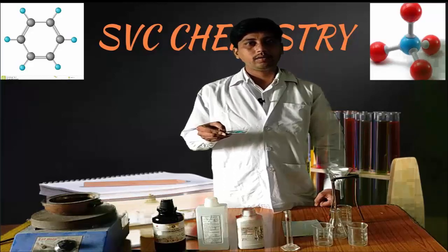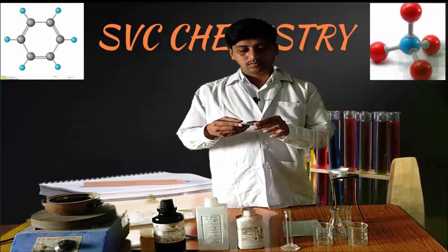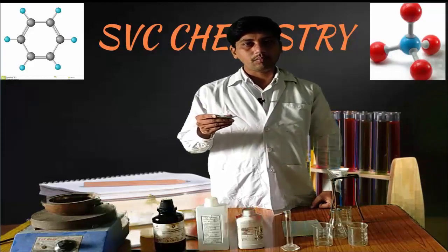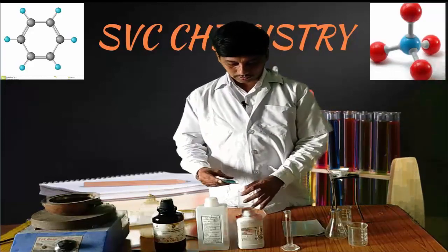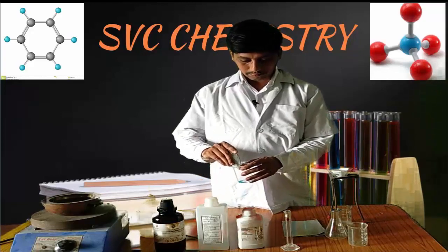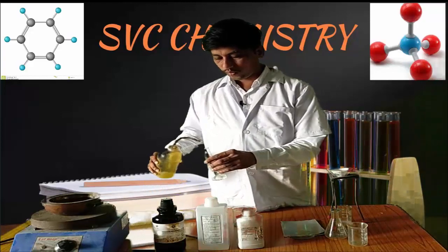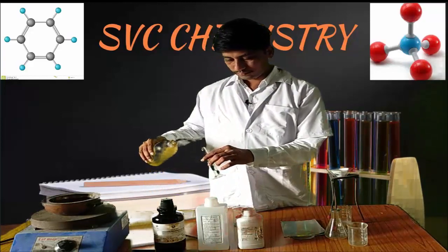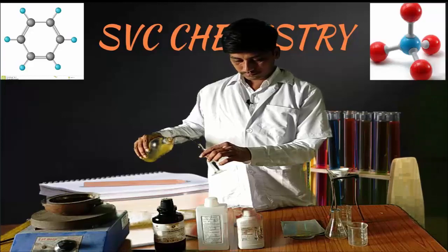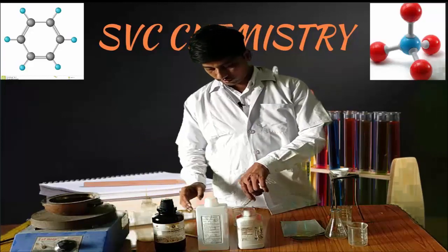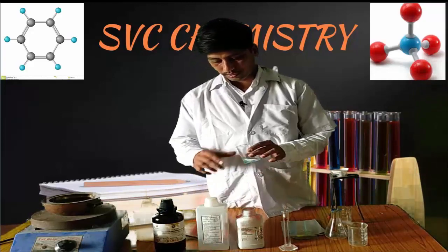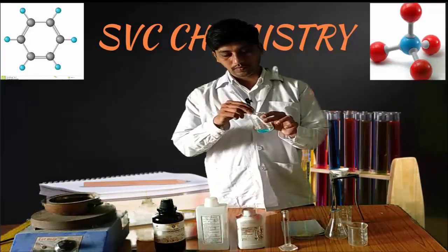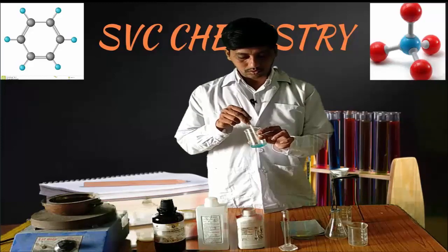Now we will see the procedure of this practical — how to do the practical. We will see the demonstration of preparation of tetramine copper two sulphate complex. For this, we require 1 gram of copper sulphate. Take this copper sulphate in a beaker and add 5 ml of distilled water. Add 5 ml of distilled water and dissolve the copper sulphate to a clear solution.